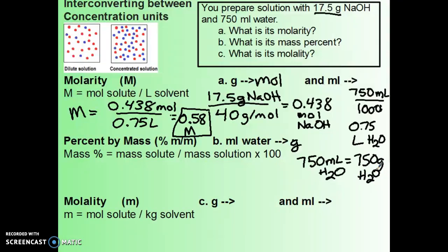The mass of our solution, don't forget, is solute plus solvent. So our solution is our 17.5 plus our 750, which gives me 767.5 grams of solution. So now I'm ready to calculate my mass percent.